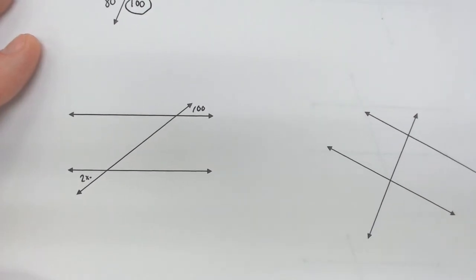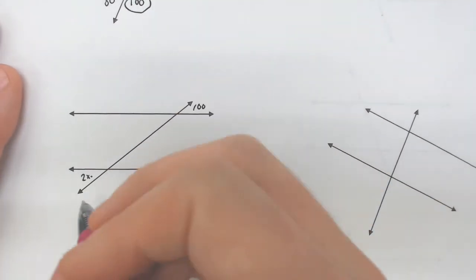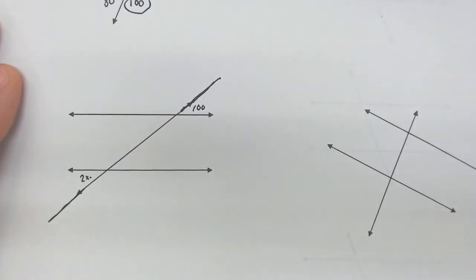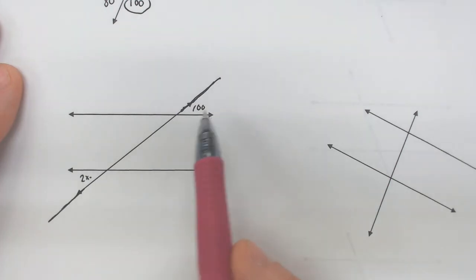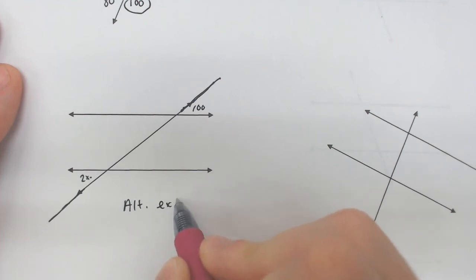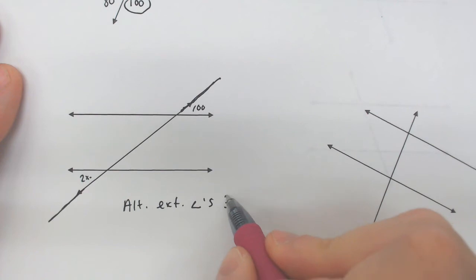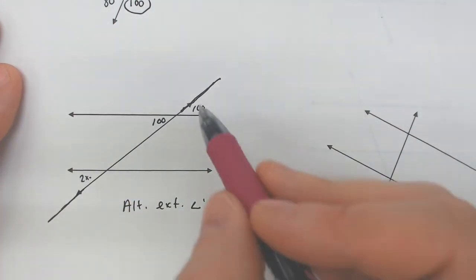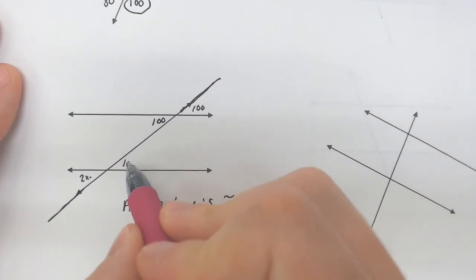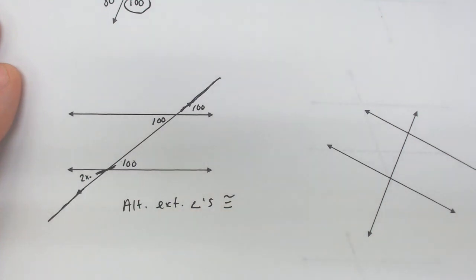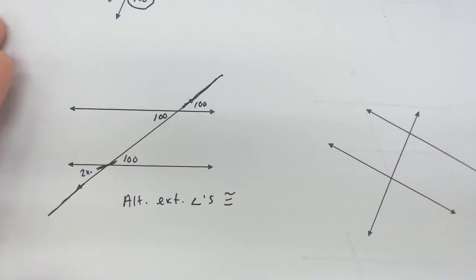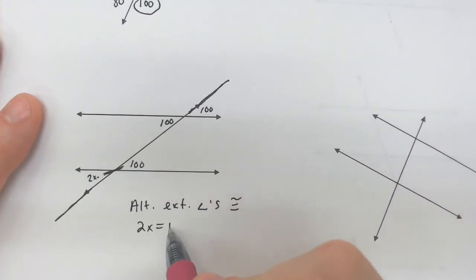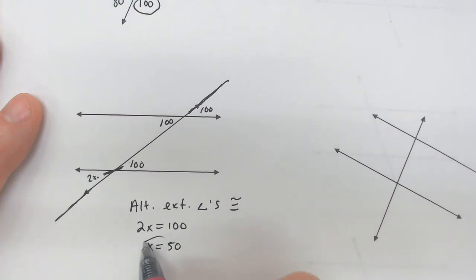So how would that apply? Here I have 2x and here I have 100. If you extend the transversal a little bit, it becomes more apparent that these are on opposite sides of the transversal and on the outside — so technically this is alternate exterior angles, which are congruent. You could also slide the 100 down as a corresponding angle. Either way, 2x equals 100, so divide by 2 and x equals 50.